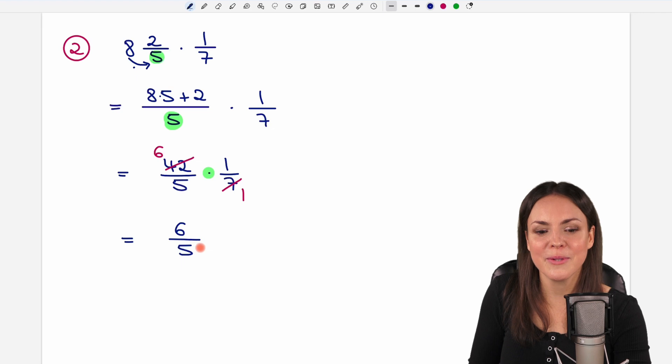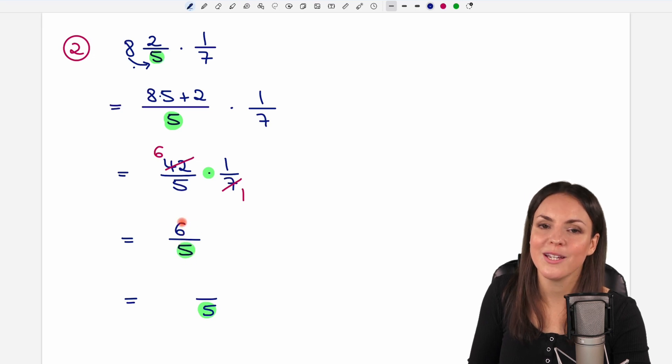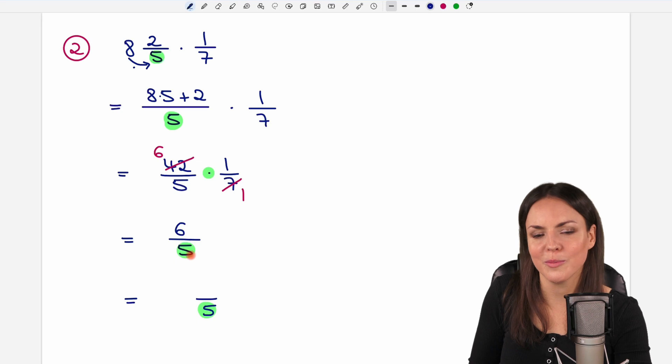We know that the denominator stays the same, so we can write the 5 already here. What about the number in the front? We have to check, how often does the 5 fit into the 6? Well, the 6 is not divisible by 5, but the next smaller number, the 5, is.